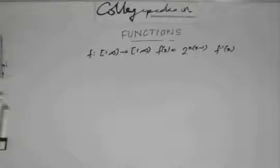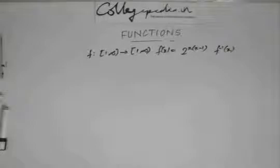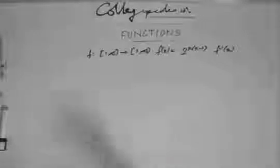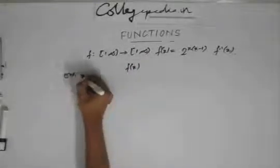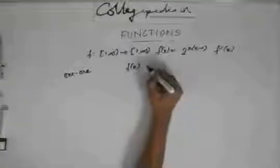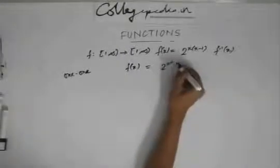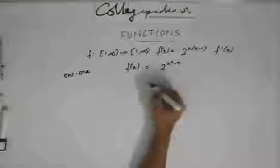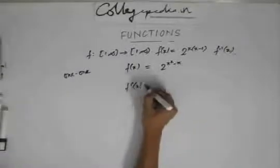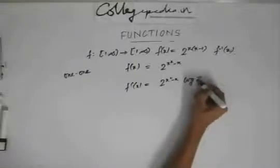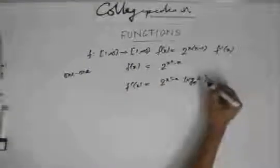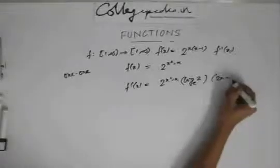Now to prove that the function is a bijective function, I need to first prove that the function is both one-to-one and onto. Let's prove that it's a one-to-one function. f(x) is this. What is f'(x)? f'(x) is 2x squared minus x times log 2. I just differentiated this to get 2x minus 1.